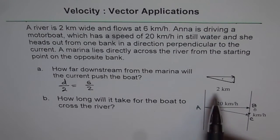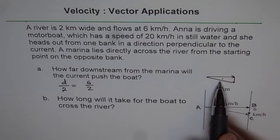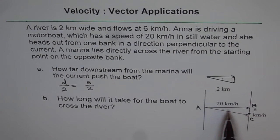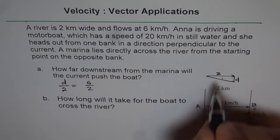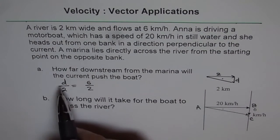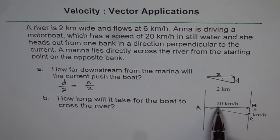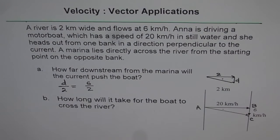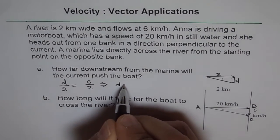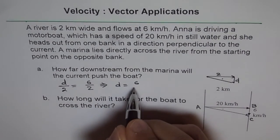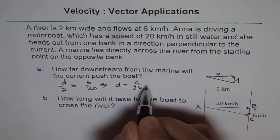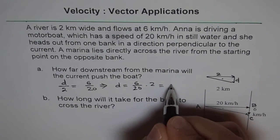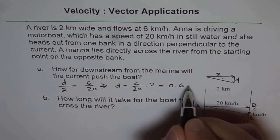Since they are similar, the ratio of their sides are exactly the same. Therefore, this distance D and we are assuming this to be 2, D over 2 is equal to 6 over 20. So that gives us the answer D is equal to 6 over 20 times 2. So that gives us 0.6 kilometers.